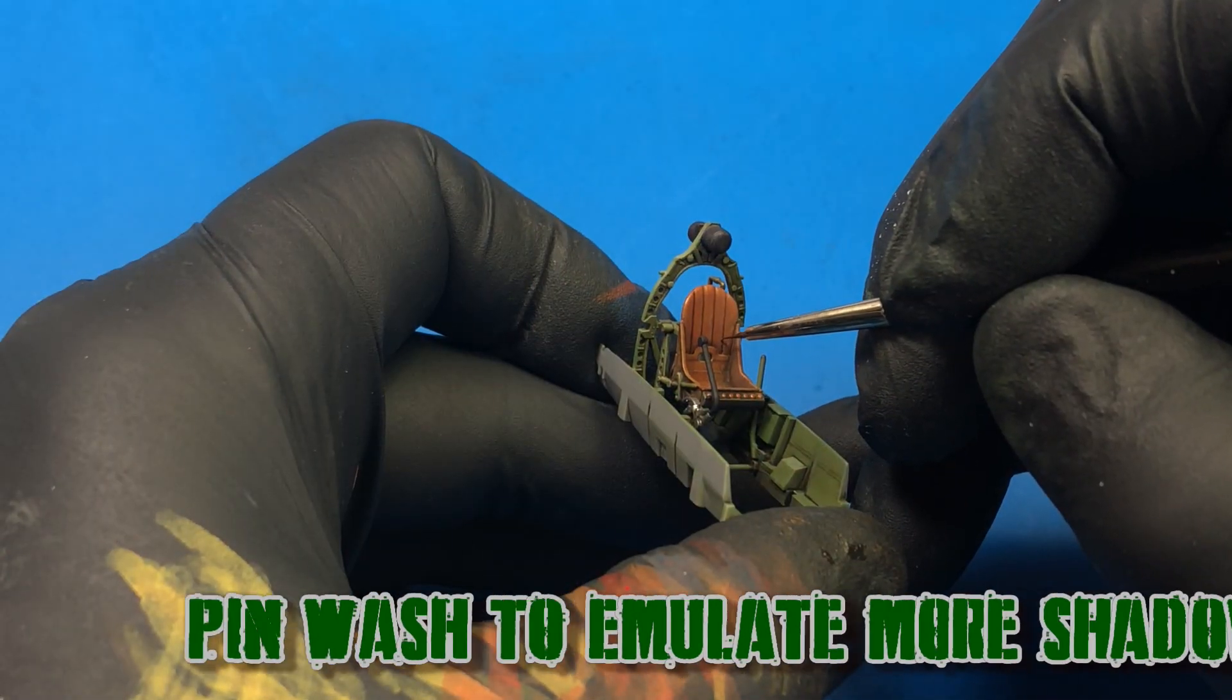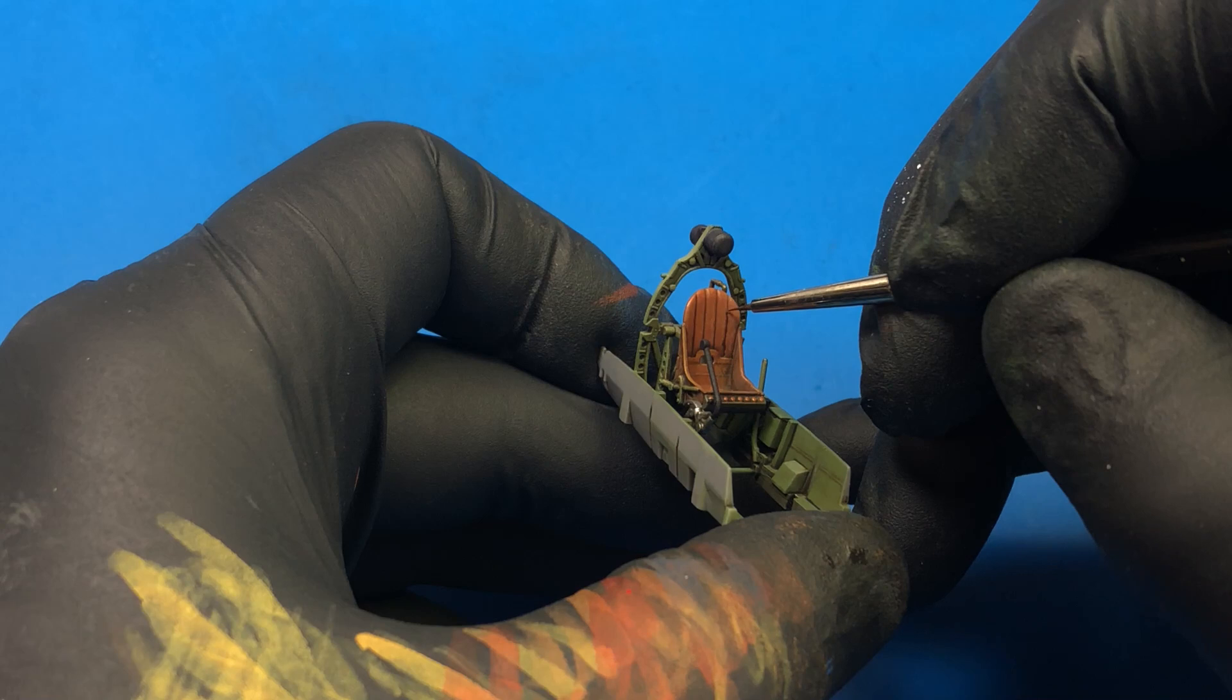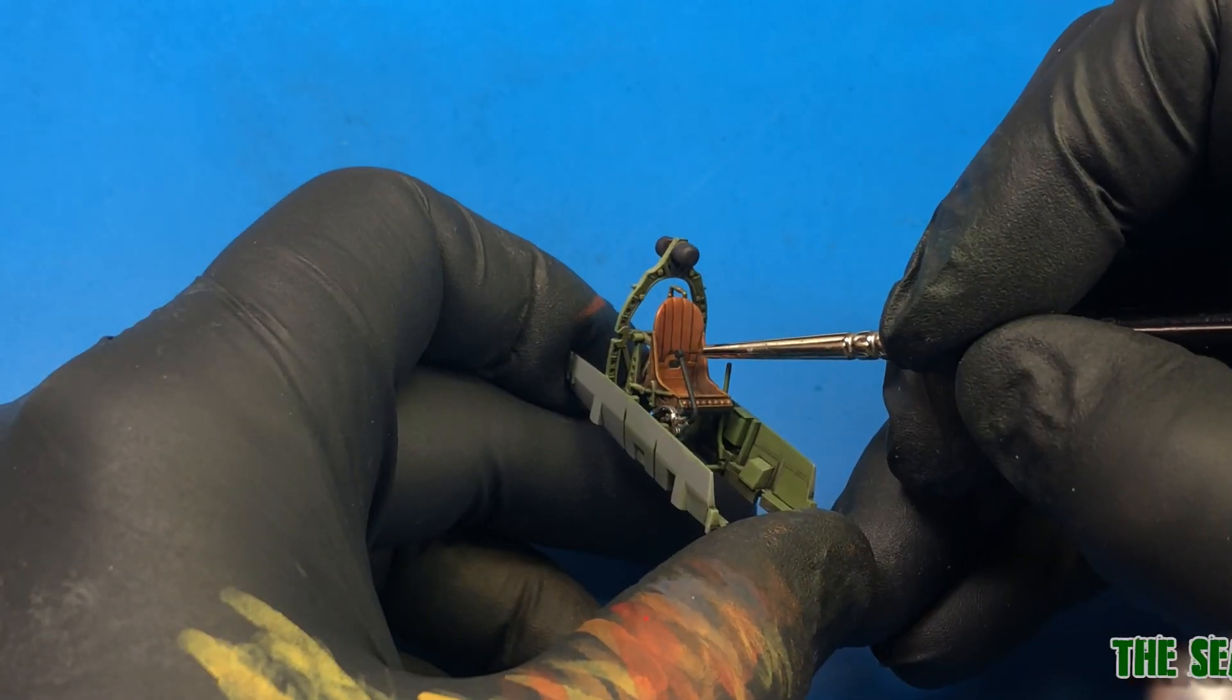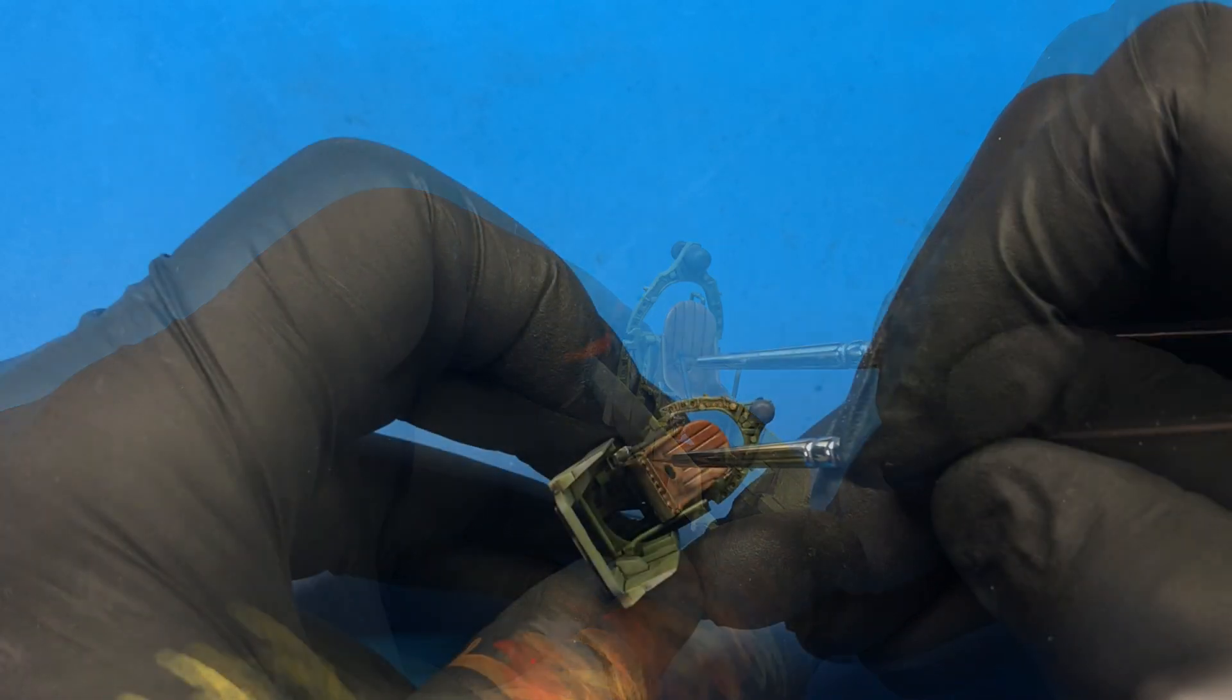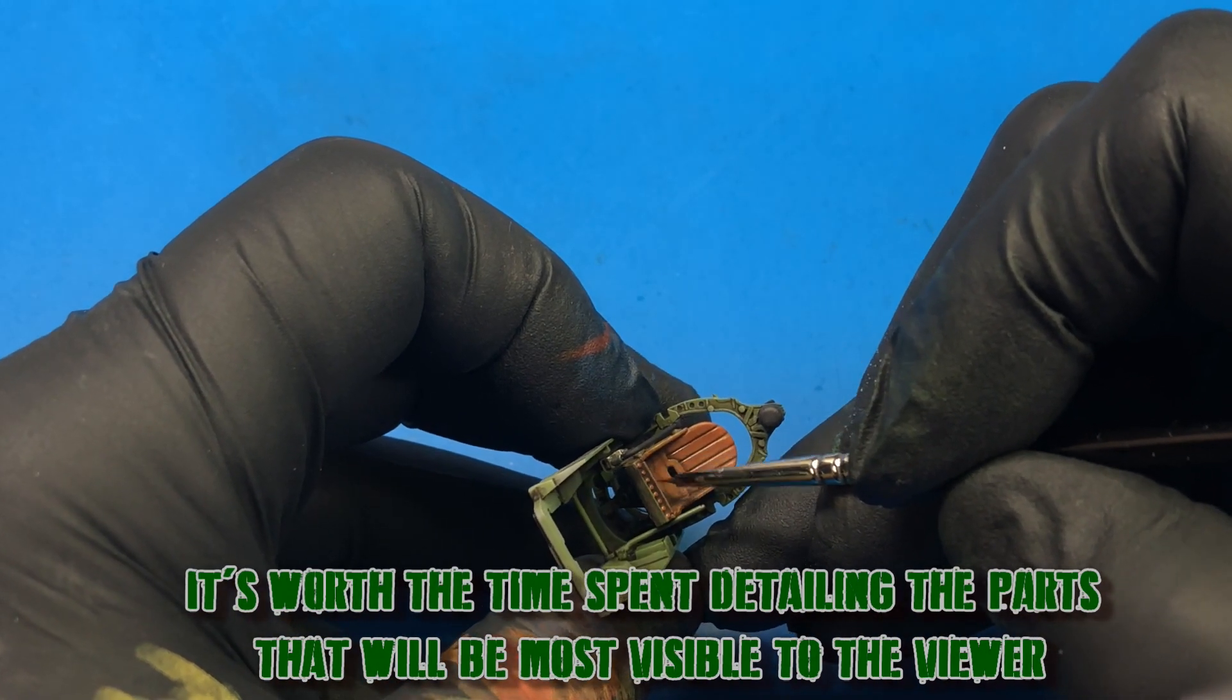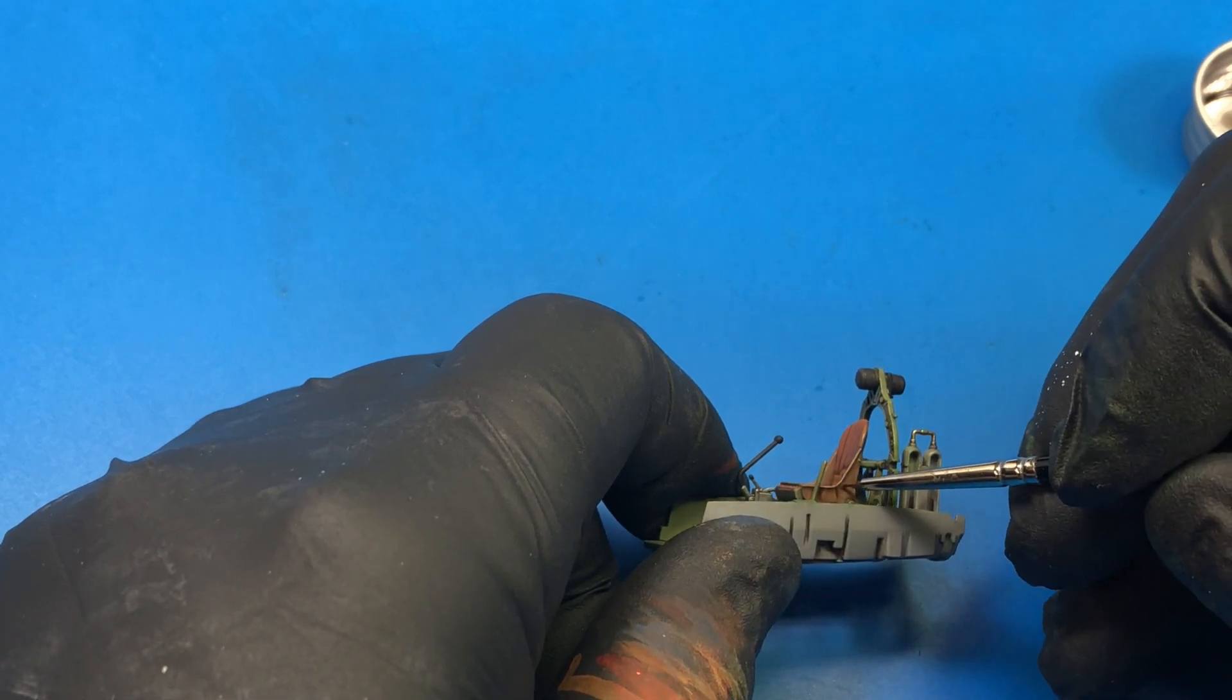One of the final steps is to go back in with a pin wash and also use those enamel glazes to create more false shadows. This will create a lot more depth and really make the piece pop. Some may find this a little too tedious and that's fine, but for me I think it's worth the time spent detailing the piece, especially since it'll be the first thing that people see when they look into the cockpit.